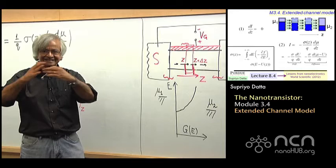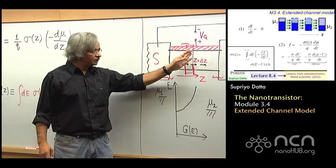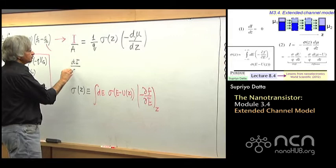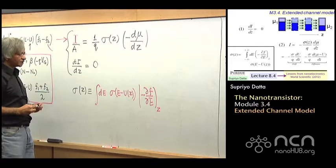So in order to have a steady state situation, the number coming in at any point must be equal to the number coming out of that region anywhere else. So I must be independent of Z — you could write dI/dZ is equal to 0.